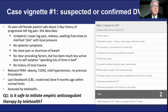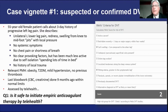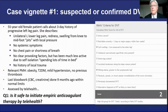Her past medical history: she's obese, type two diabetic, and hypertensive. She's never had a thrombotic episode. Her last blood work was done about nine months ago and was within normal limits. Now it's up to you to manage this patient, and the last thing she wants to do is go anywhere near a hospital.